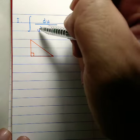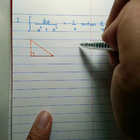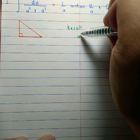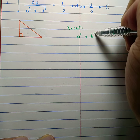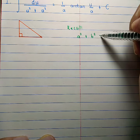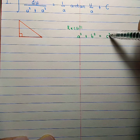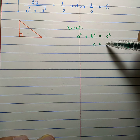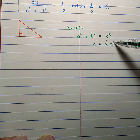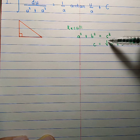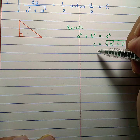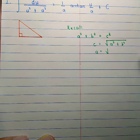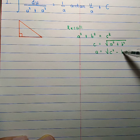Since we have u squared plus a squared, recall the Pythagorean theorem: the sum of the squares of the two legs of a right triangle equals the square of the hypotenuse. It follows that c equals the square root of a squared plus b squared. Consequently, a squared equals c squared minus b squared.